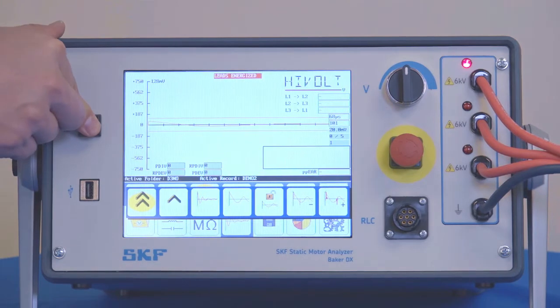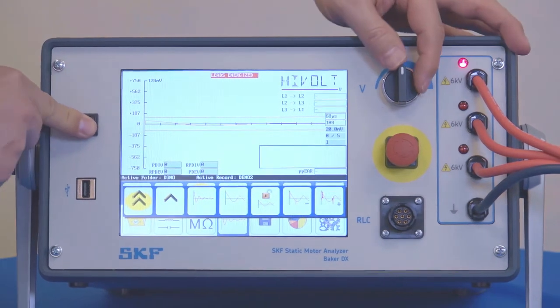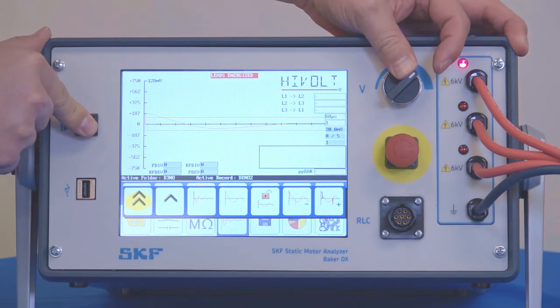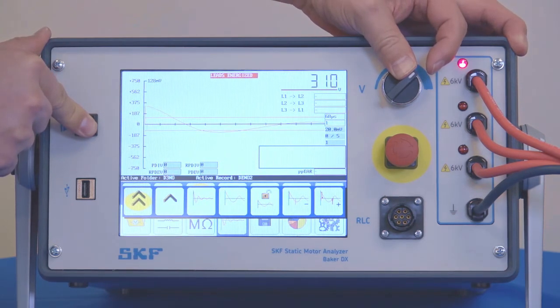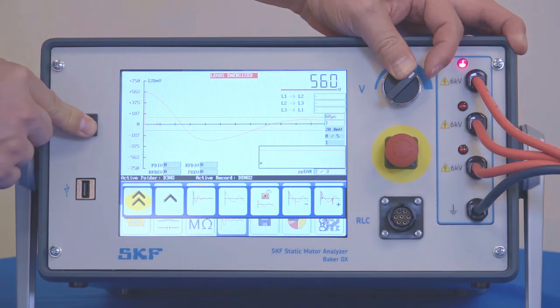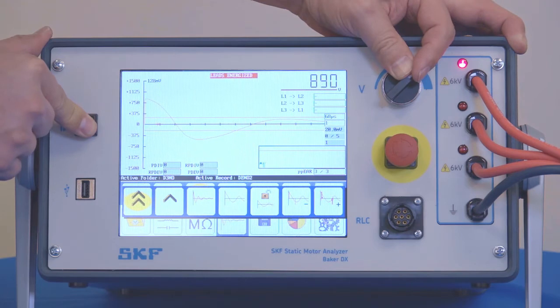Our scales are set and we're ready to ramp. Go ahead and increase the test voltage again just like we did for the normal surge test. What we're looking for now, a little bit different, is the partial discharge inception voltage and repetitive partial discharge inception voltage to populate.